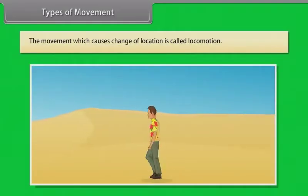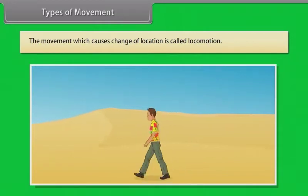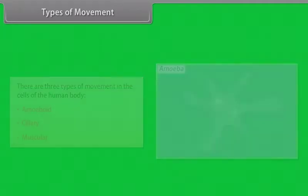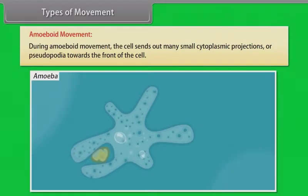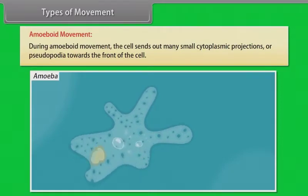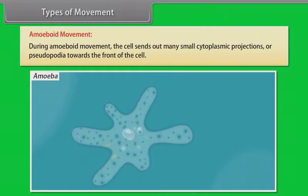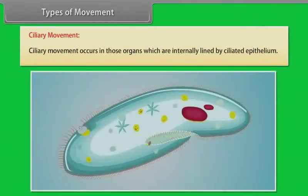Types of movement: the movement which causes change of location is called locomotion. There are three types of movements in the cells of the human body: amoeboid, ciliary, and muscular. During amoeboid movement, the cell sends out many small cytoplasmic projections, or pseudopodia, towards the front of the cell.